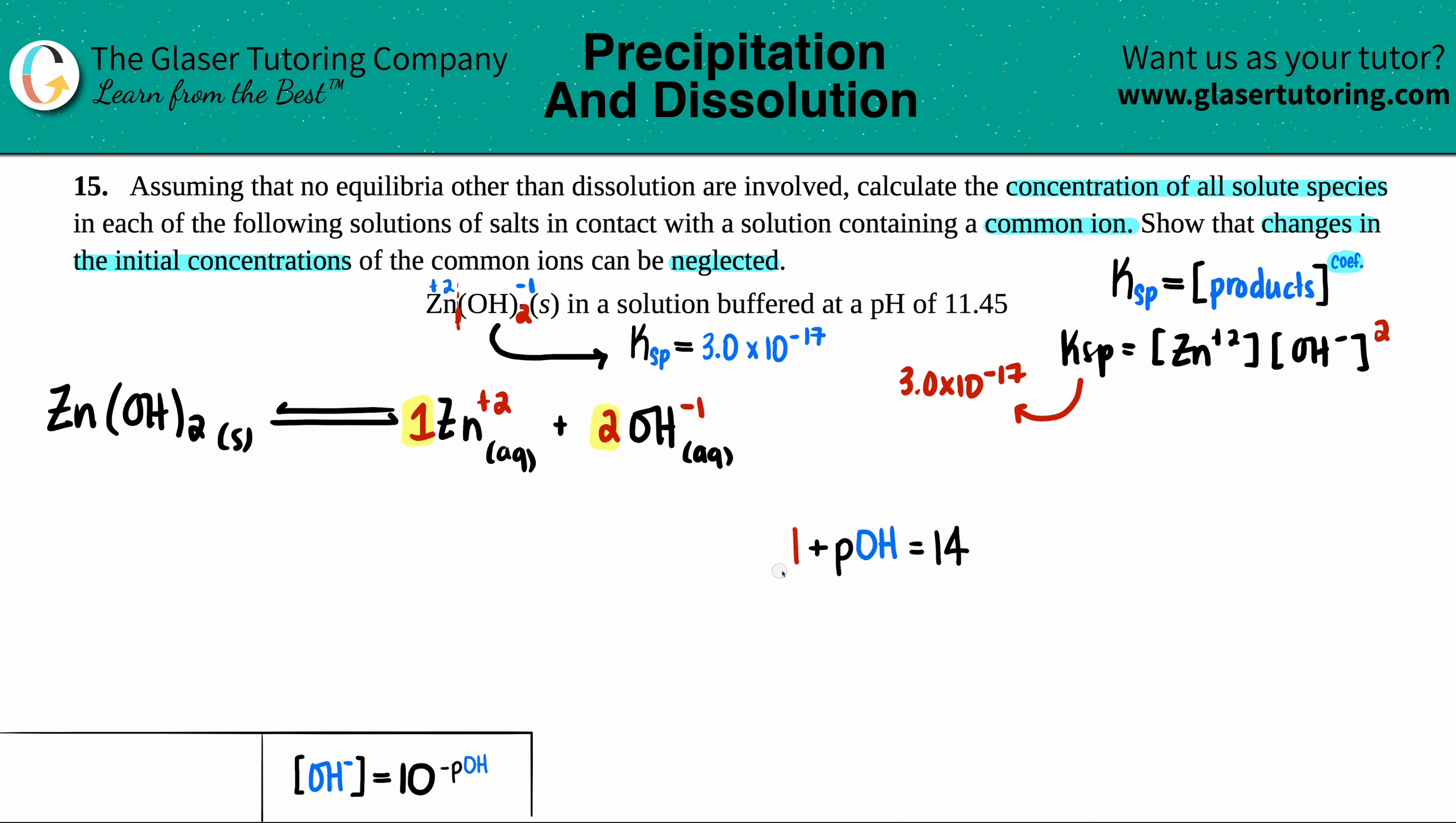Let's first grab this formula. The pH they told us was 11.45. So if I just wanted to solve for pOH, I would just have a minus 11.45 on both sides. So that's step number one. pOH would equal 14 minus 11.45. So I get 2.55.